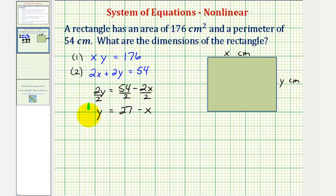Since y equals 27 minus x, we can replace y in the first equation and solve for x. By substitution, we have x times the quantity 27 minus x equals 176.